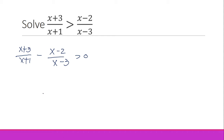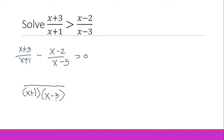Next we are going to combine the left side into a single term by combining those fractions. To do that we need a common denominator, so we find the LCD. The LCD here is (x plus 1) times (x minus 3). I will be creating a video on how to find the LCD or LCM for an algebraic expression, so stay tuned if you're having trouble with that.